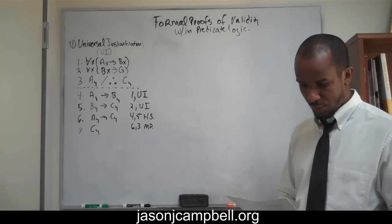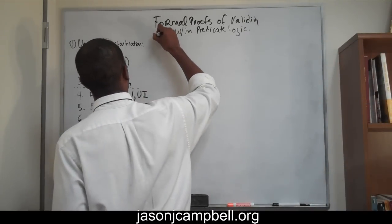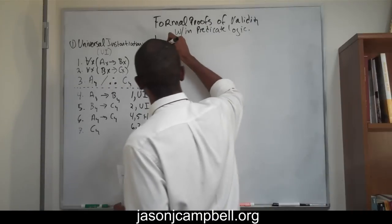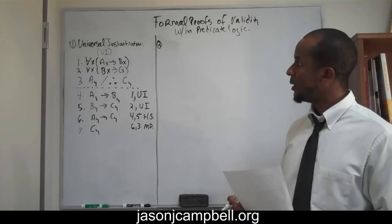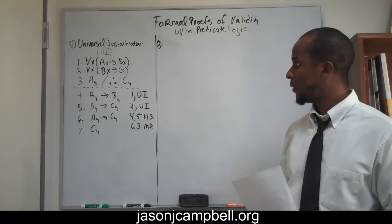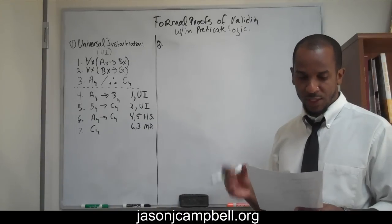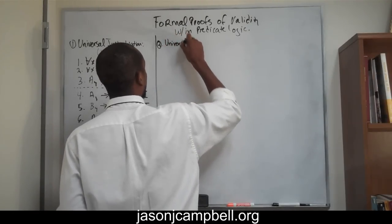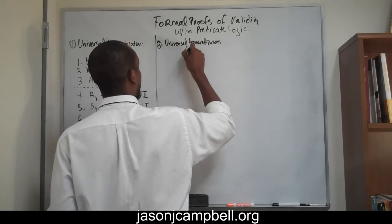That ends problem number one. Let's move to problem number two. In problem number two, the example I want to give you is one of universal generalization. We did universal instantiation on problem one, and for number two I want to solve and show the validity of an argument in predicate logic using universal generalization, abbreviated UG.